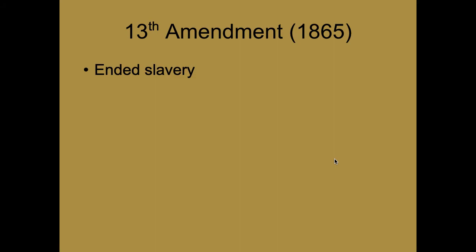A lot of people think the Emancipation Proclamation ended slavery, but it didn't. What the Emancipation Proclamation did was say that slaves were free in states that were in open rebellion against the United States. But what if the war ended and those states were no longer in open rebellion — could slavery return? And there were three border states that were slave states but did not participate in the Confederacy, where slavery didn't end either. The 13th Amendment cleared up any issue: slavery is illegal in the United States.